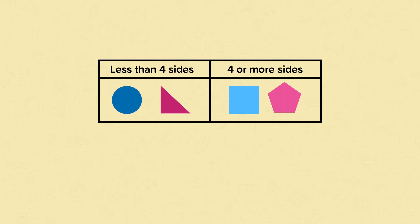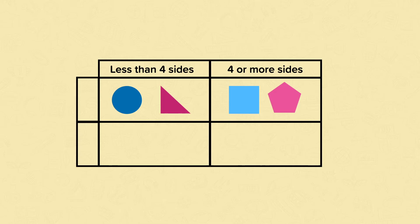If we want to break these categories down further, we can add an extra row. This turns our simple sorting table into a Carroll diagram. We now need to give the rows a heading to categorize the shapes further.